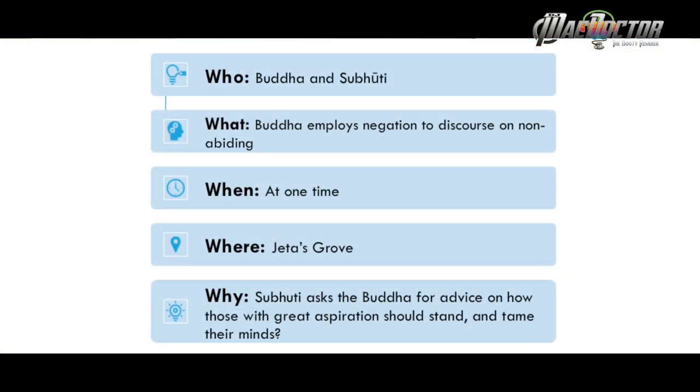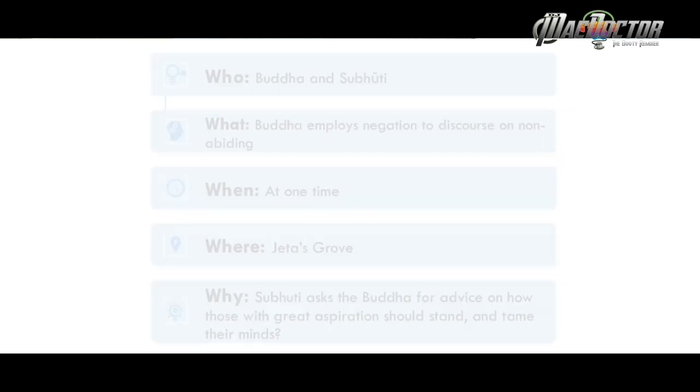Who knows who Subhuti is? He appears in many sutras, especially with the Perfection of Wisdom texts. He is actually known for being the foremost in understanding emptiness, and he is also the one who takes the place of the Buddha to expound on concepts like emptiness. So he is a very important person, and even his birth and the naming of Subhuti has a story behind it.